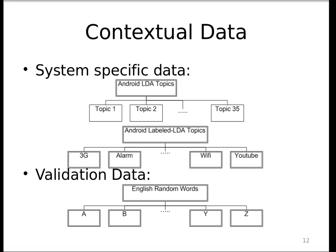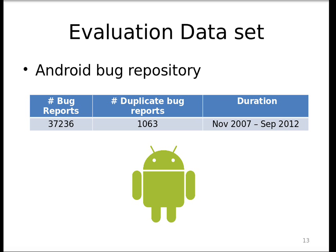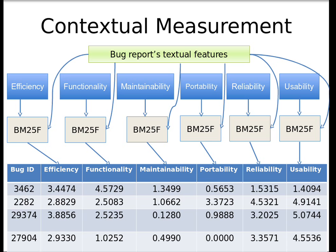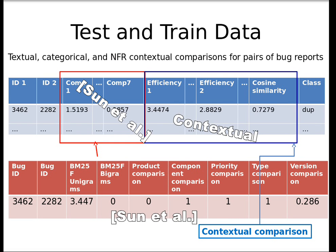We also investigate English random words to make sure our contextual features aren't just adding overfitting features. We evaluate this approach using the Android bug repository, which has 40,000 bug reports with 1,000 marked as duplicates. To mark a bug as related to efficiency or functionality, we use BM25F to compare a word list of efficiency or functionality words against the bug report's textual features and record that score. We have pairs of bugs with their textual, categorical, and contextual comparisons, which we use to classify whether two bugs are duplicates or not.